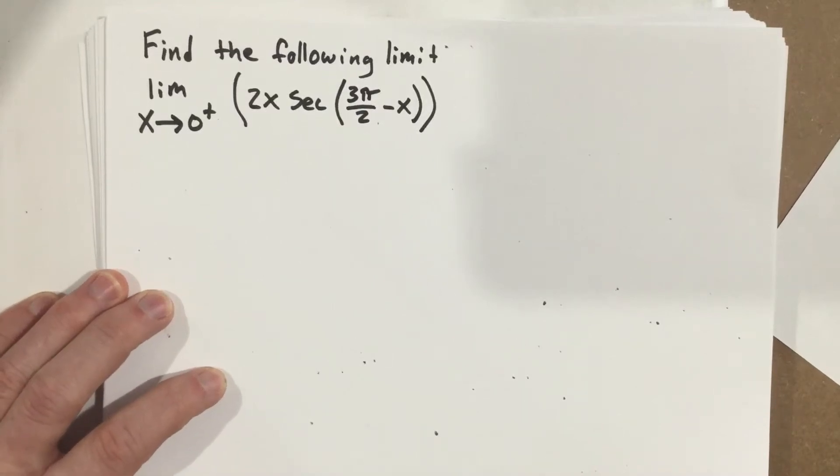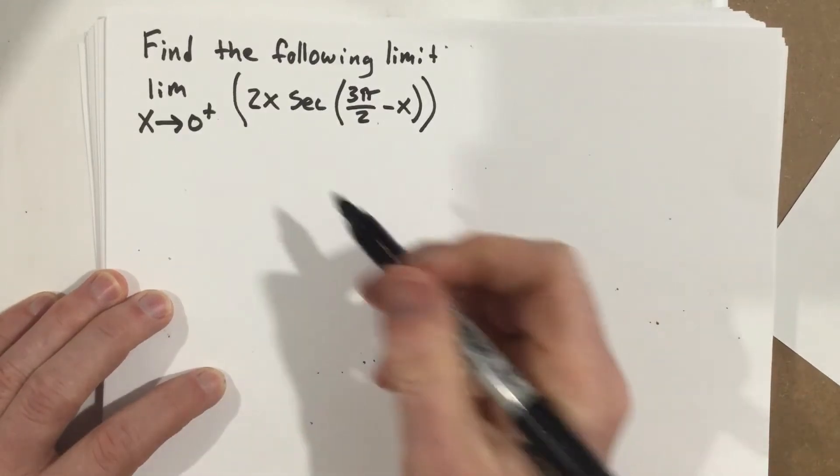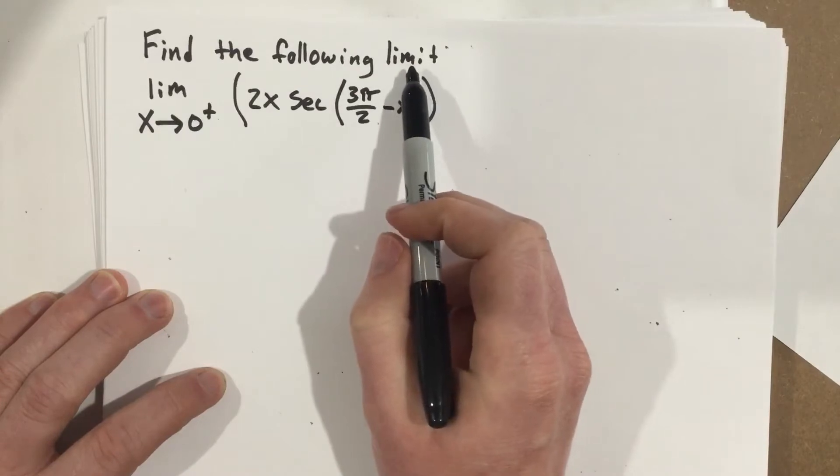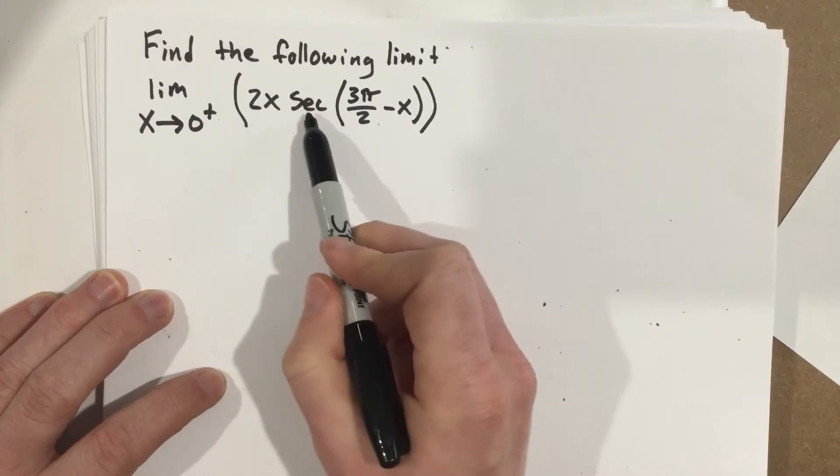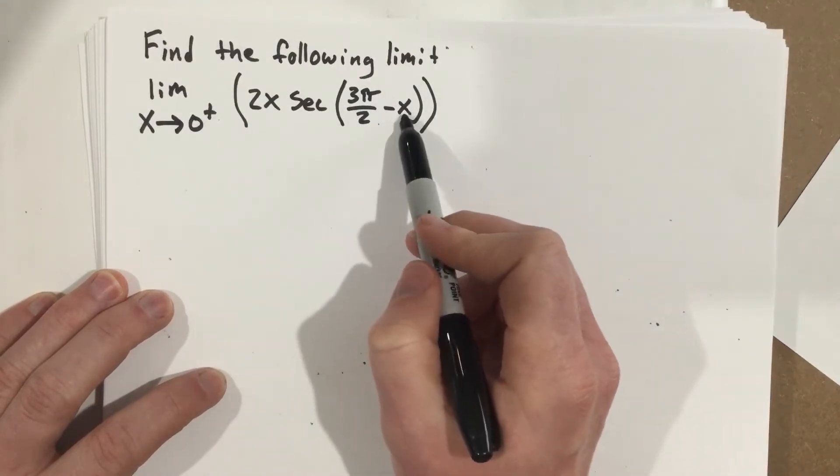This is problem number 3 from section 4.5. We're going to find the following limit, the limit as x approaches 0 from the right of 2x secant 3π over 2 minus x.